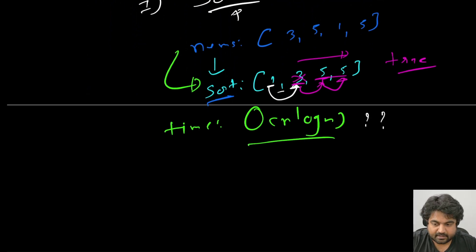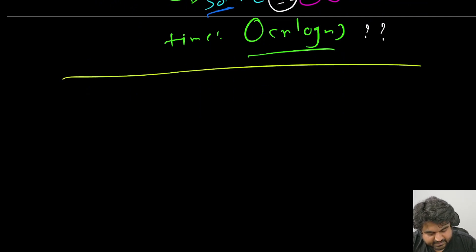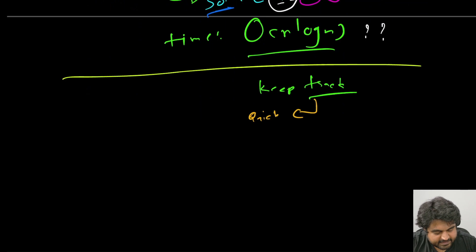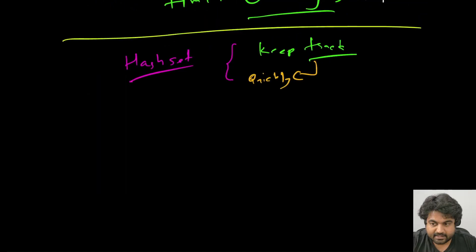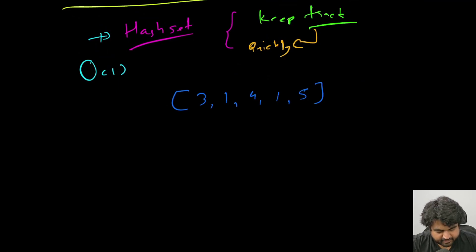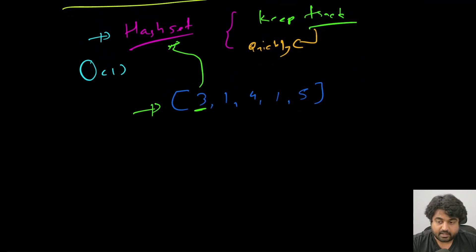The fastest approach involves keeping track of all elements we have already seen and being able to access them quickly. The best data structure for this is a hash set, which cannot contain duplicate values and can find any element in O(1) time. We iterate over the array and for every single value, we first check whether that value is already present inside the hash set.